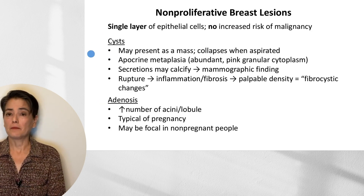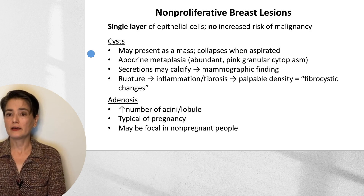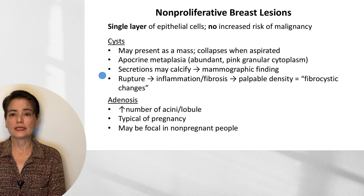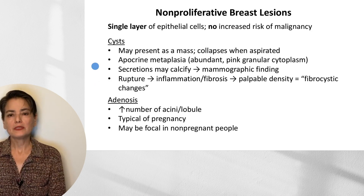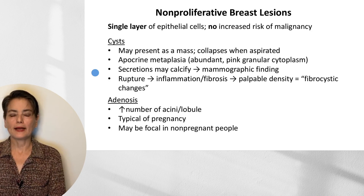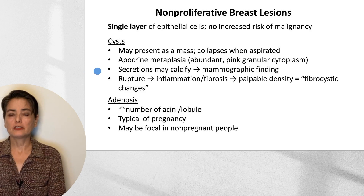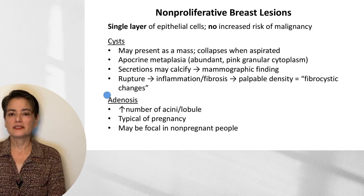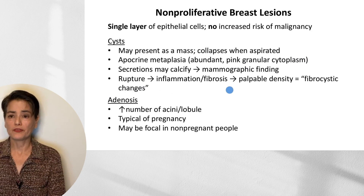The two lesions associated with non-proliferative breast lesions are cysts and adenosis. Cysts may present as a mass. You can recognize them through ultrasound as fluid-filled, or a fine needle aspirate will cause the mass to collapse when aspirated. Associated findings include apocrine metaplasia, where lining luminal cells develop abundant pink granular cytoplasm resembling apocrine glands. We can also get calcifications of secretions within the cyst, leading to a mammographic finding. Cysts may also rupture, leading to inflammation and fibrosis causing a palpable density — this finding is referred to as fibrocystic changes.